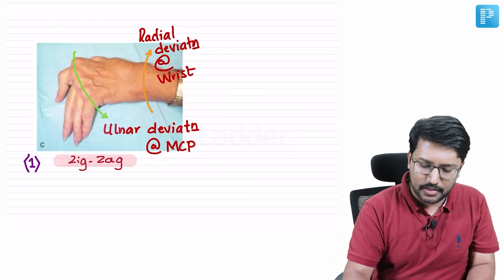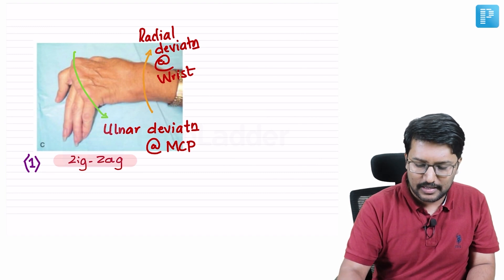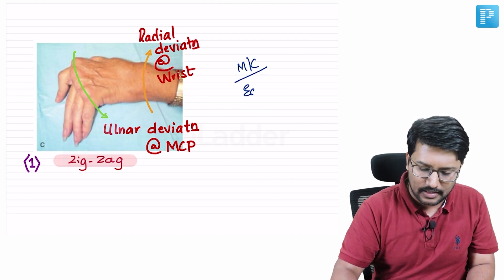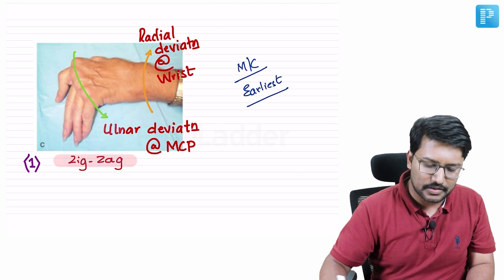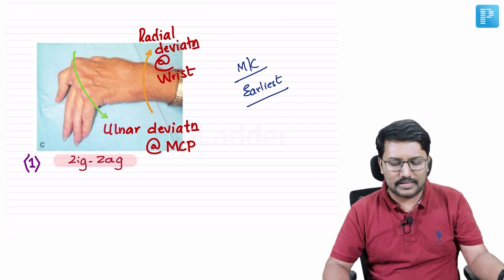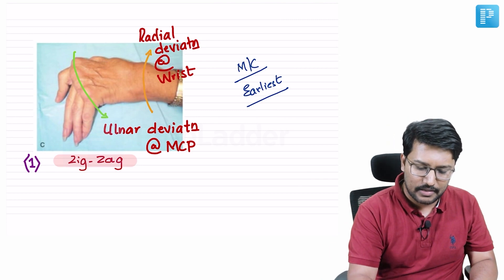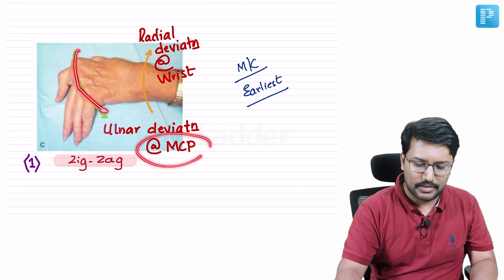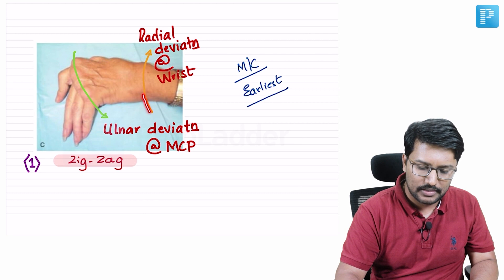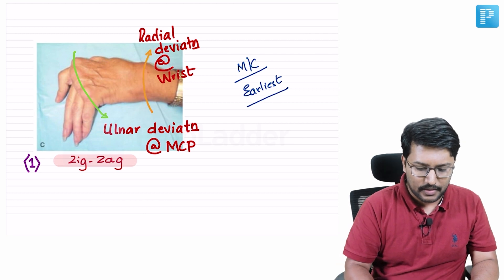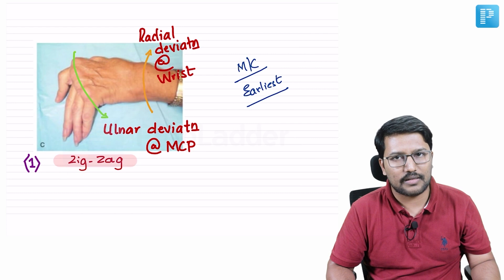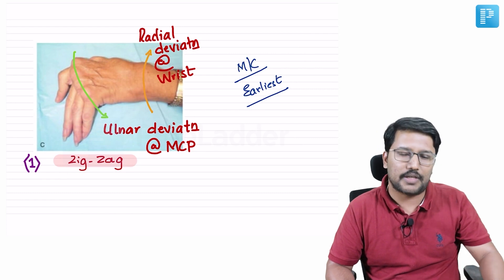The zigzag deformity is the most common and earliest deformity seen in patients with rheumatoid arthritis. In zigzag deformity, there is ulnar deviation of the metacarpophalangeal joint and the wrist joint has radial deviation. That is what we call zigzag — and that is not Z deformity.